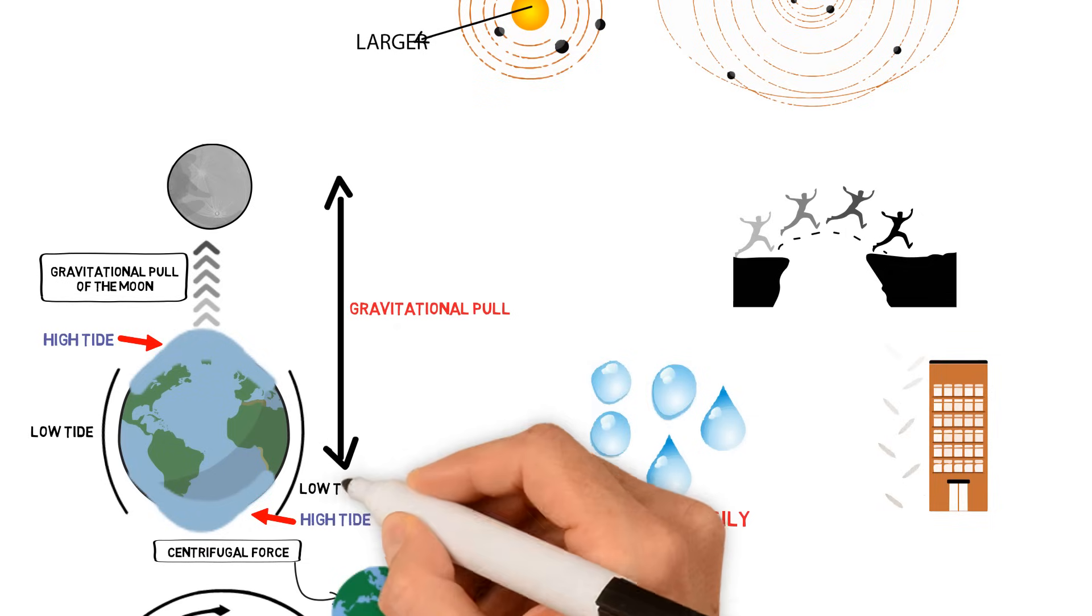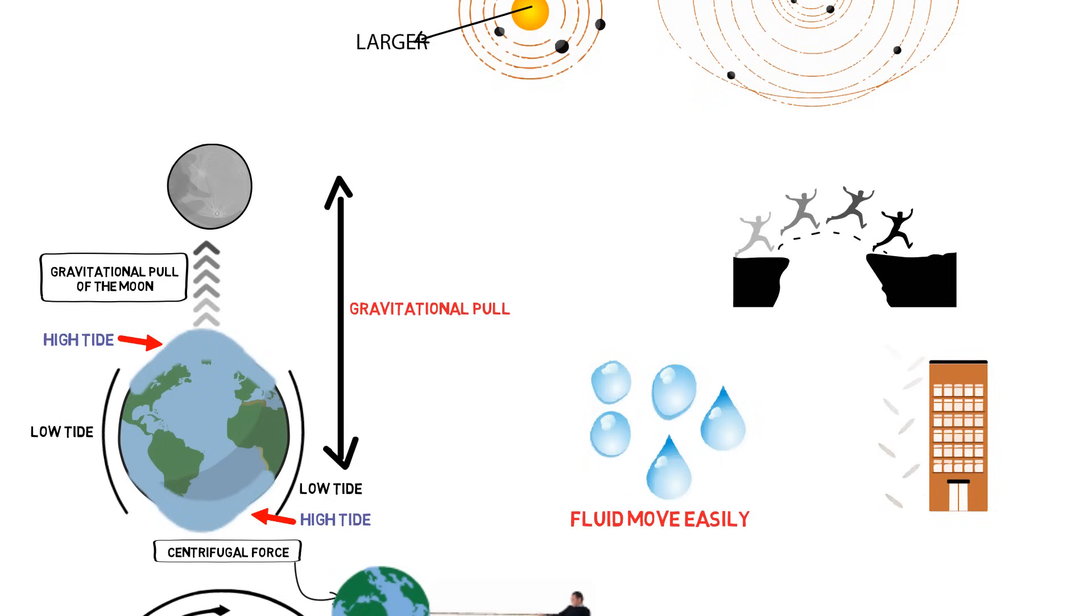It is a bit confusing, right? But that's how it is. Now this all happens only when there is moon and the earth. What about the sun?